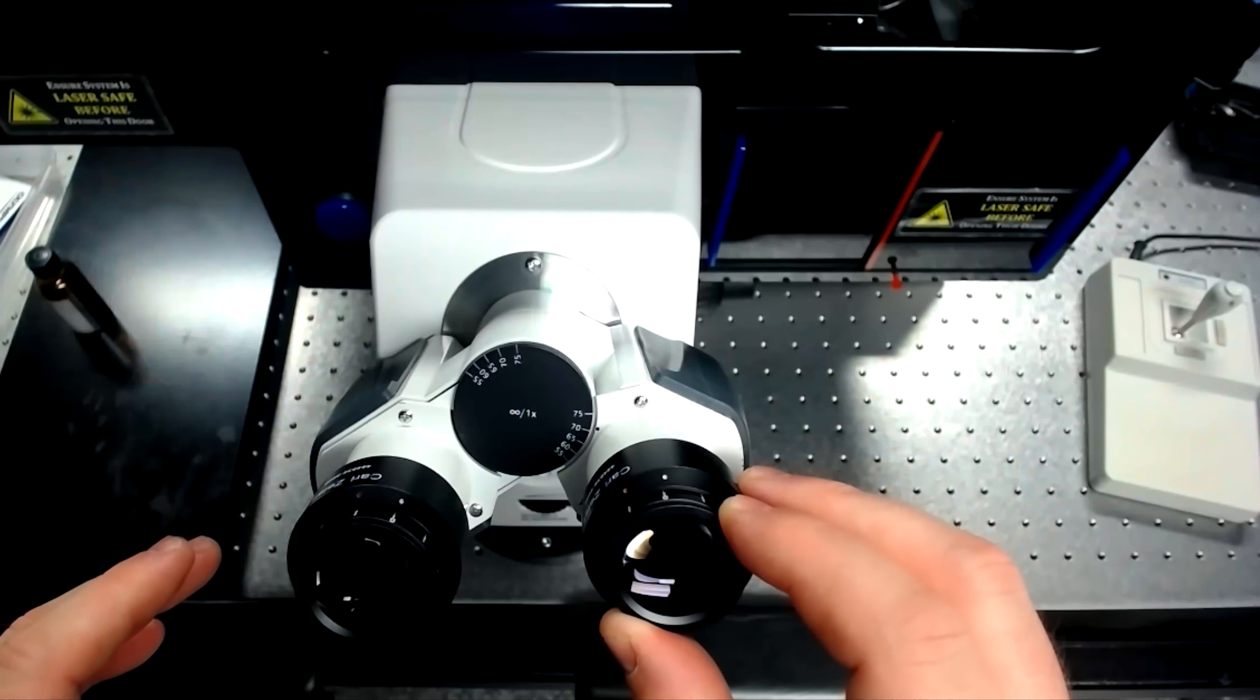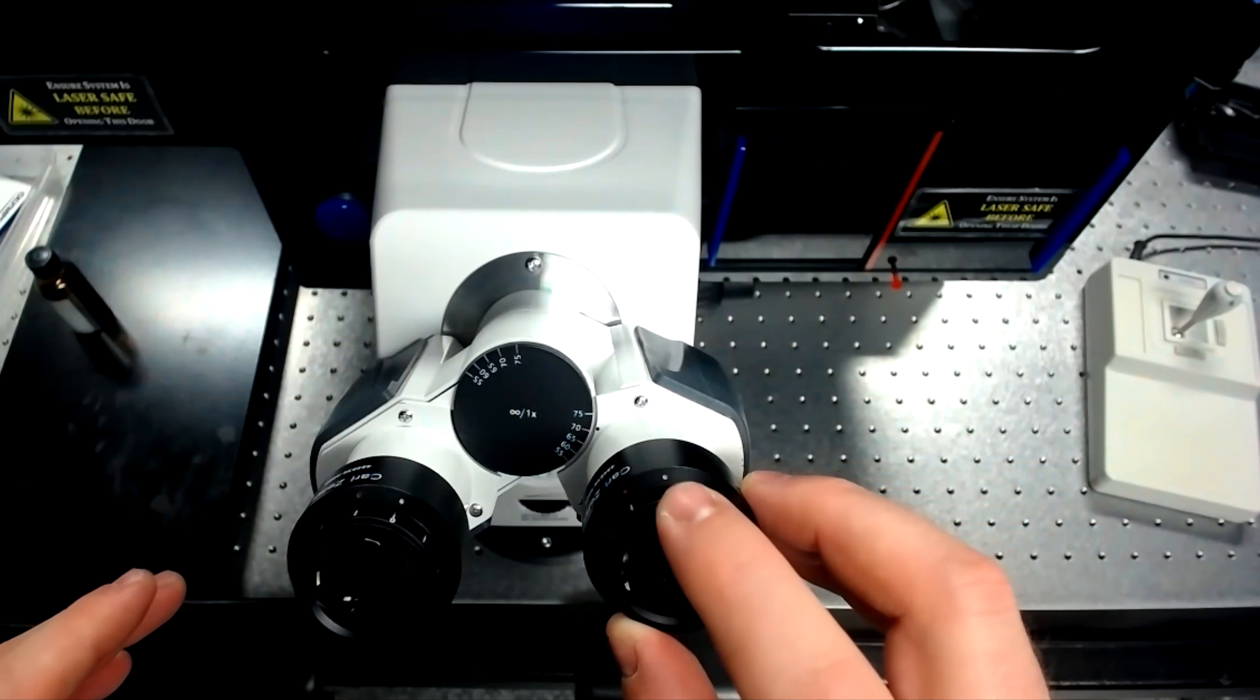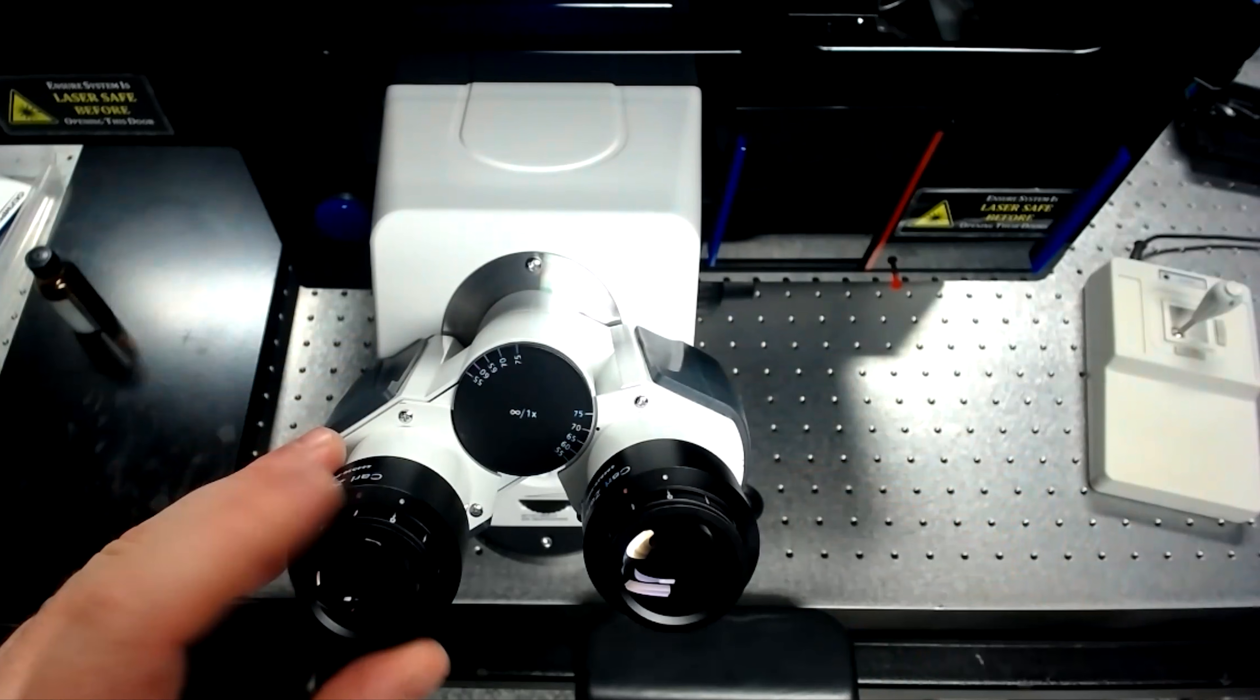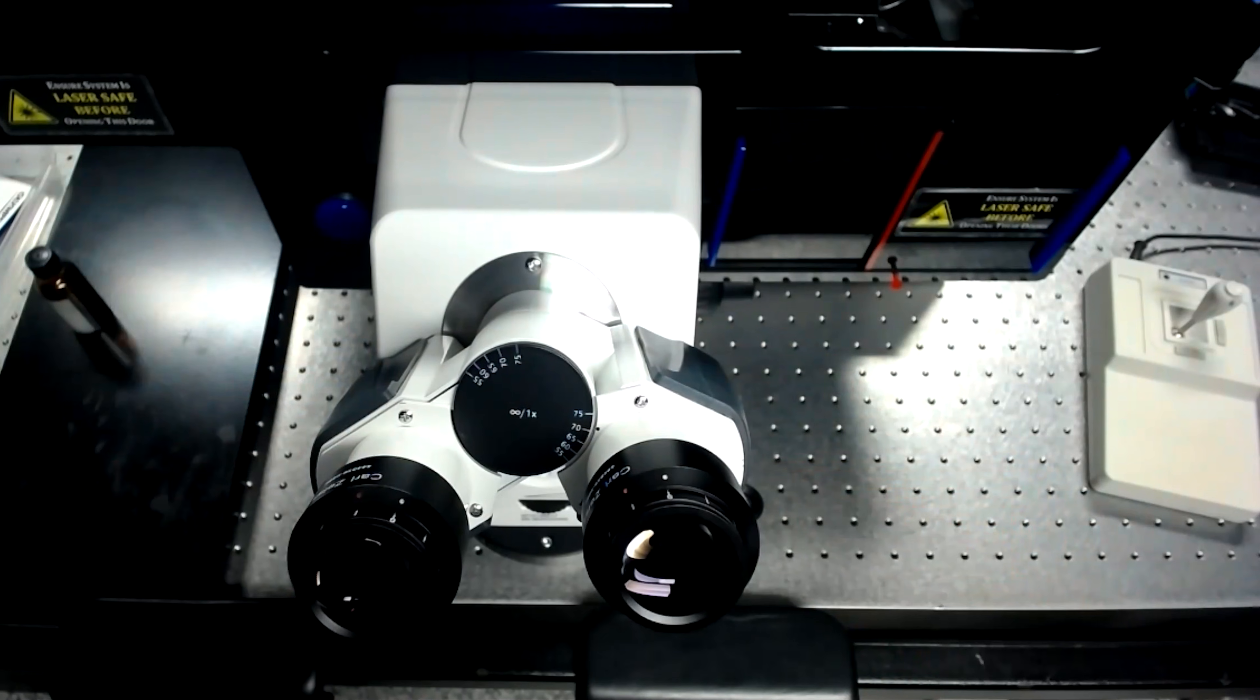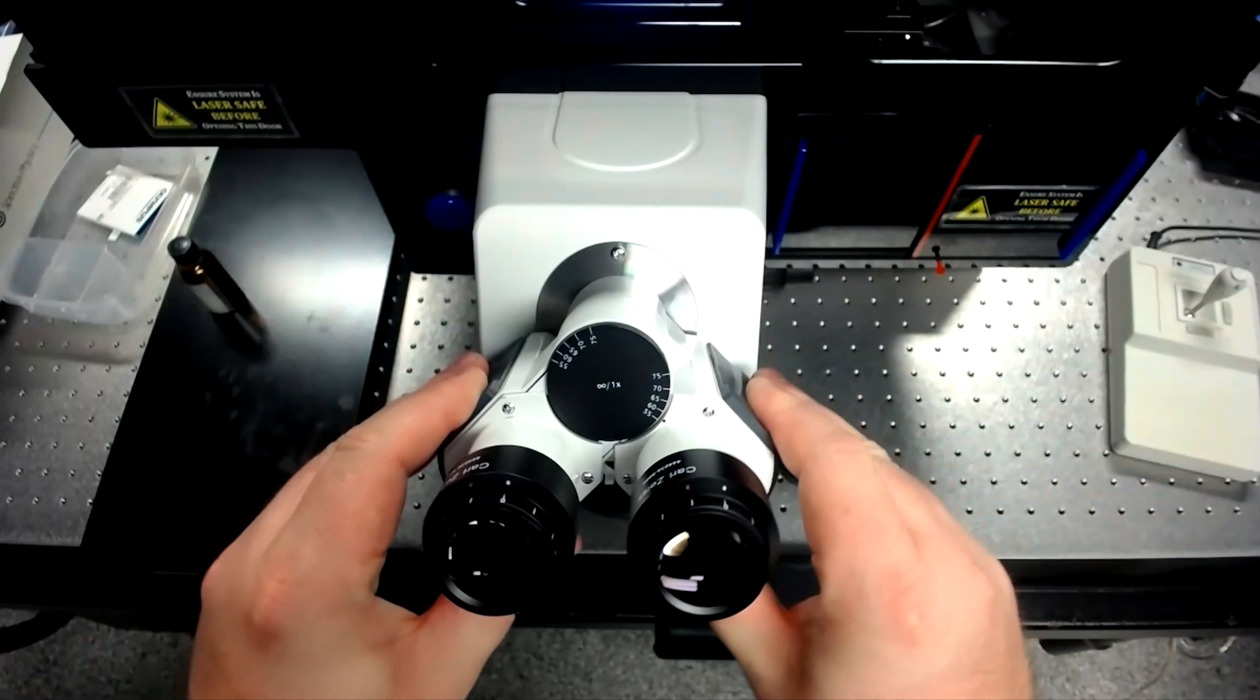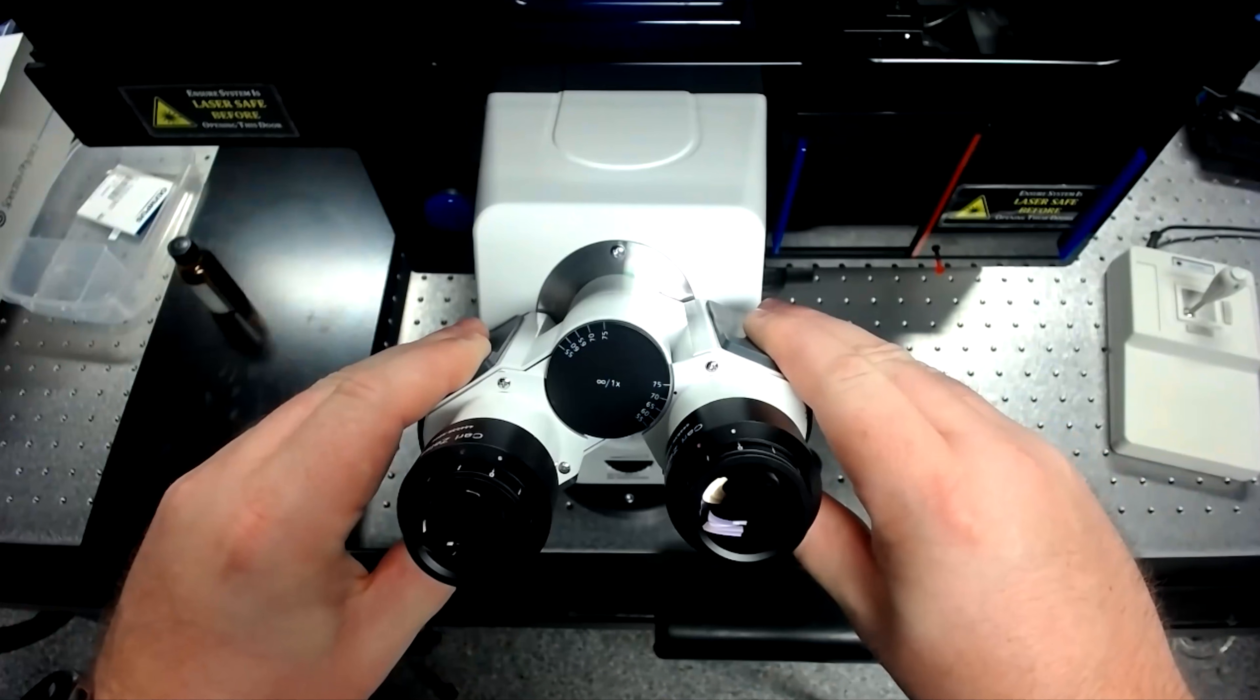The eyepiece diopters can be adjusted to suit your own eyes. Otherwise, they should be left at zero by lining up the white dot with the marked zero position. Additionally, the eyepieces can be adjusted to suit your interpupillary distance.